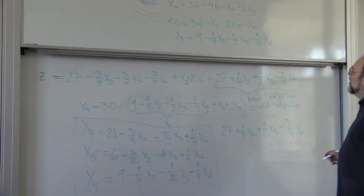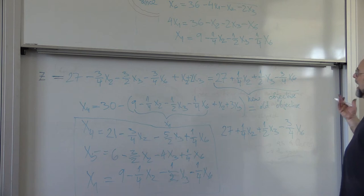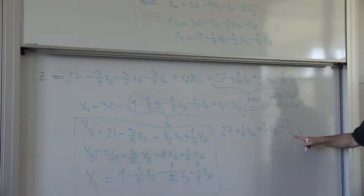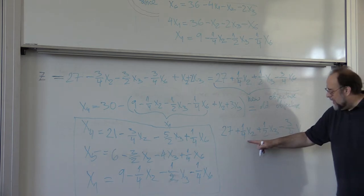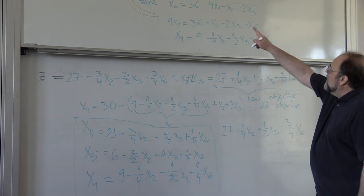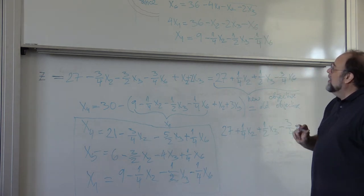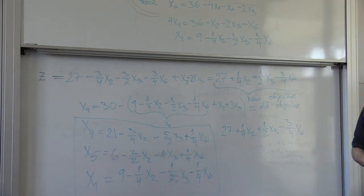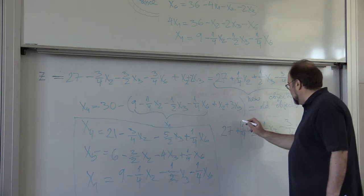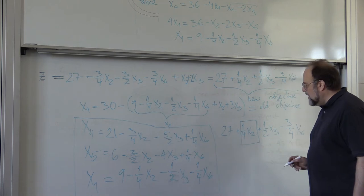And what can we do now? We cannot increase x6 because it has negative coefficient, but we can increase either x2 or x3. At the moment they are all zeros. Now let's see, say we choose to increase x2.